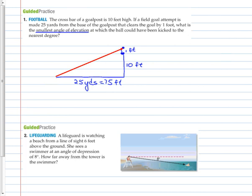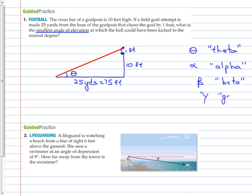They want to know the smallest angle of elevation. This symbol is the Greek letter theta — it is a very common letter used to indicate angles. We might also use alpha, beta, or gamma. These are very common Greek letters you will see in mathematics. I'll use theta a lot for an angle, and we're trying to figure out this angle here.